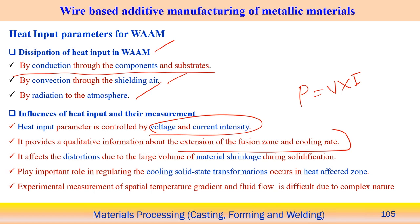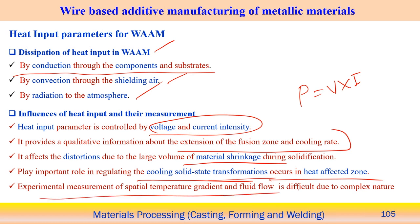Heat input has consequences for distortion and shrinkage during solidification. Solid-state phase transformation also occurs in the heat-affected zone, which always passes through the solid state during cooling. Experimental measurement of temperature gradient and fluid flow is difficult for complex structures. These are typical characteristics of the WAAM process that must be considered to understand the complete process.